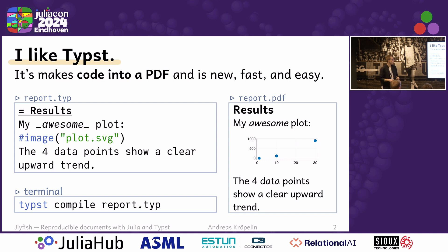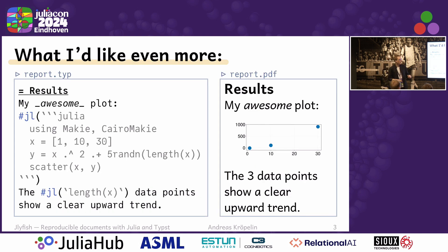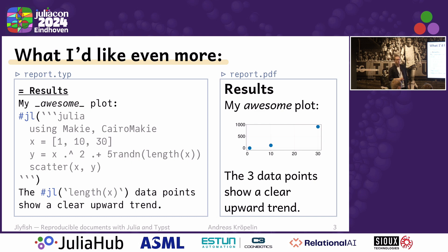What I would prefer to do instead of calling this image function is to have the Julia code directly in my Typst document. I would like to have this magical JL function where I can give a code block, write down the Julia code that produces the plot, and get the result. And since I've defined the plot inside my document, I can also query for the correct length of my data array and get the correct number.